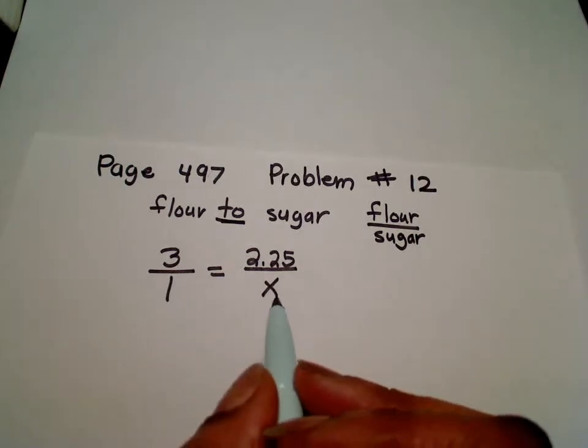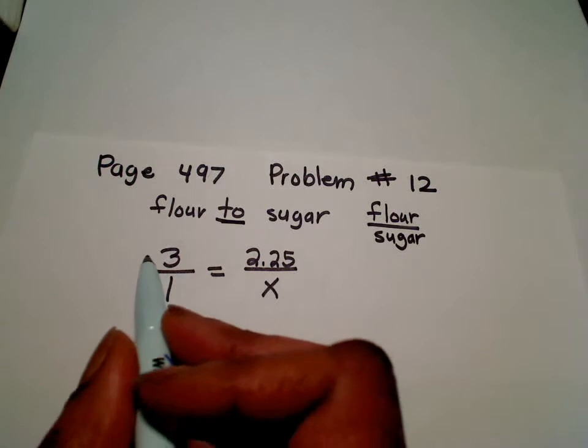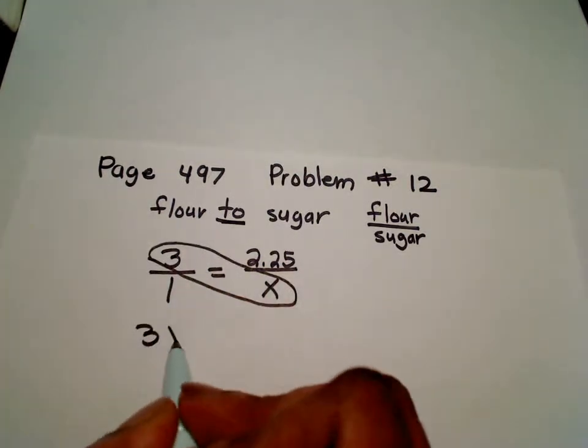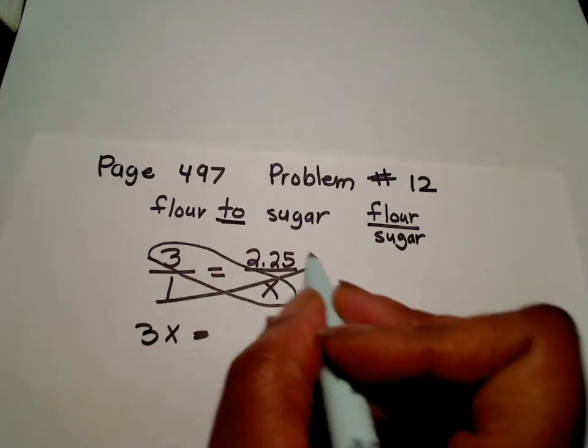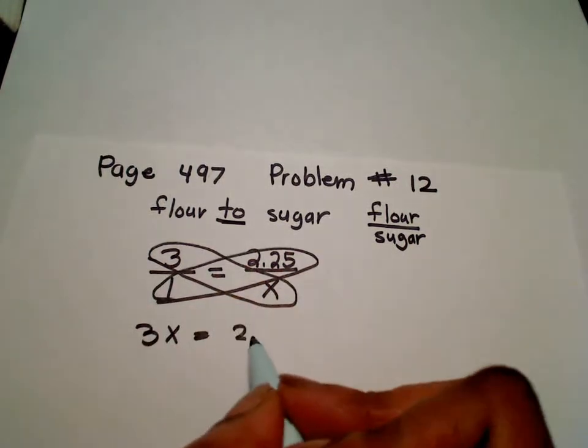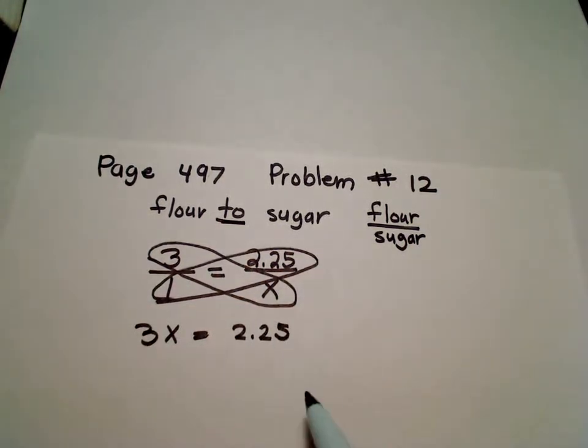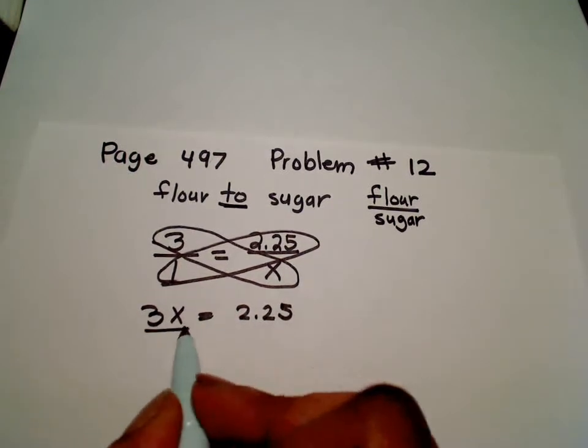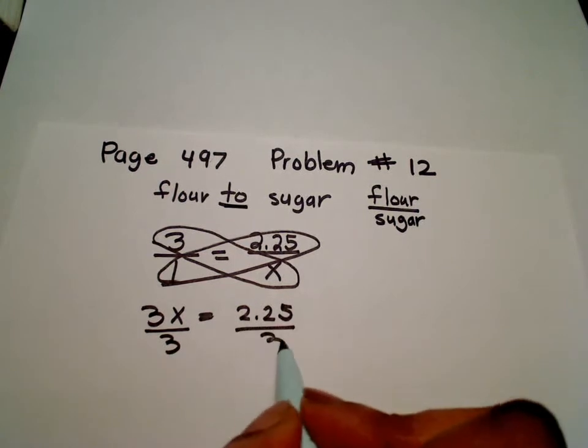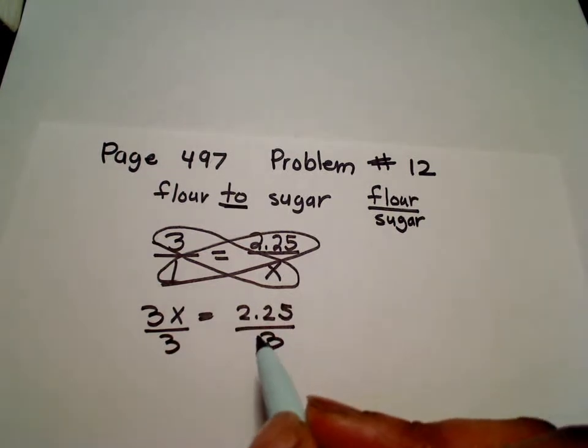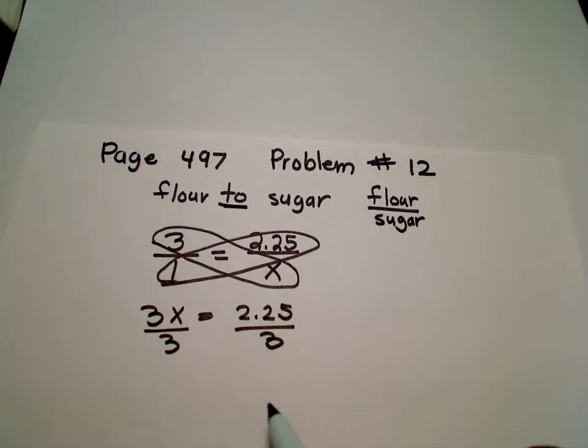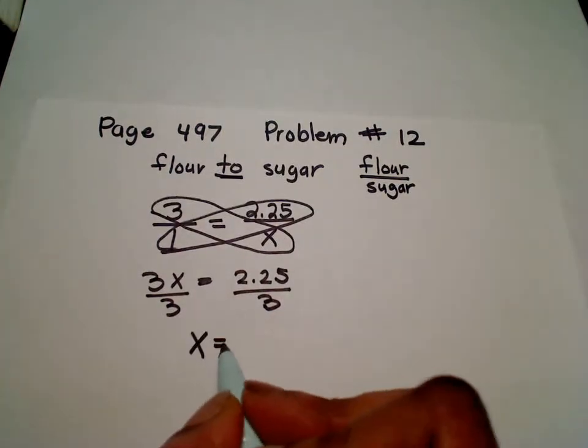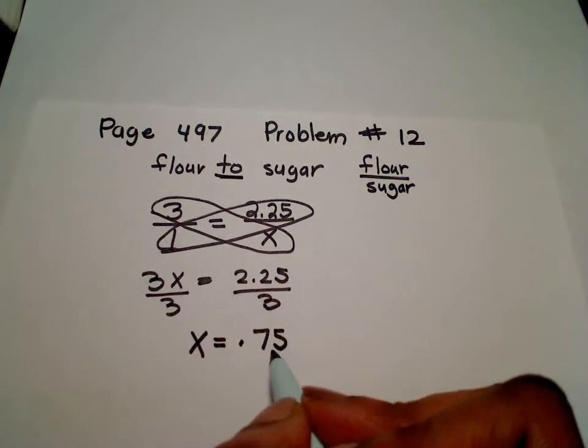Now what we're going to do is solve for x. Remember with ratio problems you can cross multiply. So I'm going to do this equals this. Now, once you've cross multiplied, we're just going to solve for x by dividing both sides by 3, and when you end up dividing both sides by 3, you'll notice what you'll end up with is x, which is equal to 0.75.